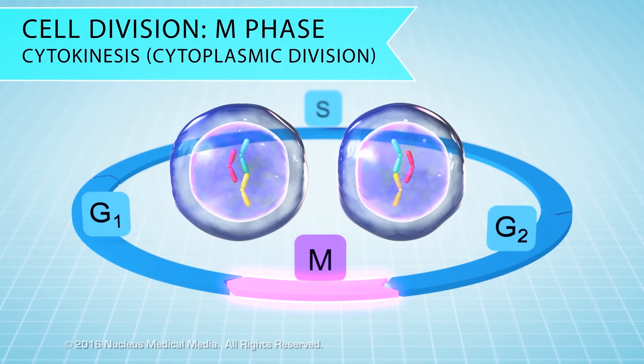So at the end of M phase, you have two daughter cells, identical to each other and identical to the original cell.